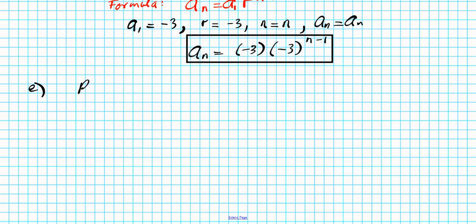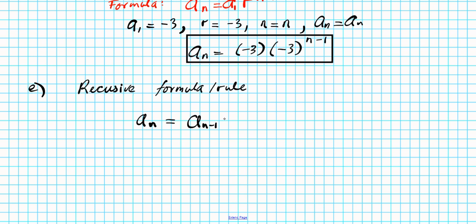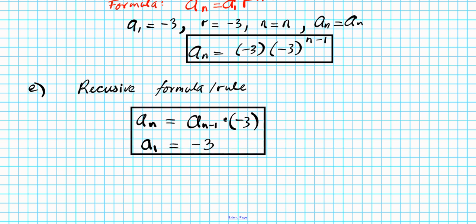Part E: find the recursive formula or rule. Looking at the pattern: to find the next term Aₙ, you take the previous term Aₙ₋₁ and multiply by the common ratio. In this problem, the common ratio is negative 3, so Aₙ equals Aₙ₋₁ times negative 3. We also indicate the starting point: A1 equals negative 3. Following this pattern of repeated multiplication starting from the first term defines the recursive formula.